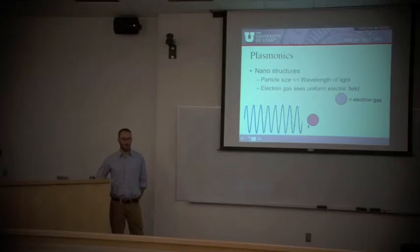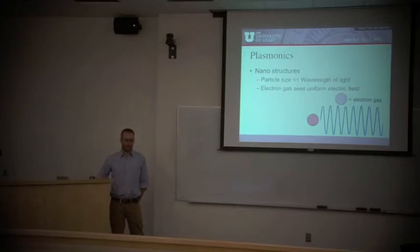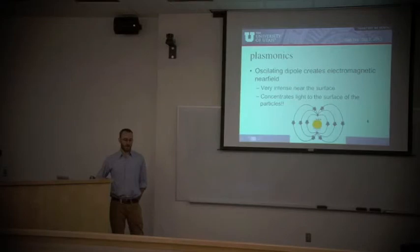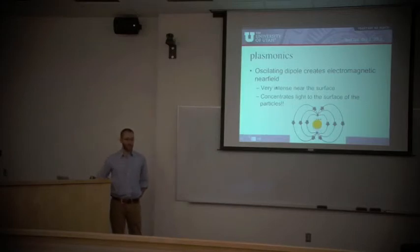If this is smaller than the wavelength, the whole structure is experiencing a uniform field. And what you get is oscillation of the electron gas with the electromagnetic field as it passes through it. When you have oscillating negative charges, you also have oscillating positive charges. And this defines an oscillating dipole, which is how you create electromagnetic fields. Essentially this creates what's called a near field. It's a very intense electromagnetic field, very close to the surface of this particle. You can take this light that's passing over it, which might be diffuse. But by creating this electromagnetic near field, you're creating a high intensity light. It's essentially concentrating the light very close to the surface of the particle.